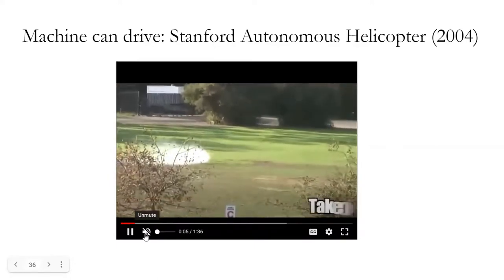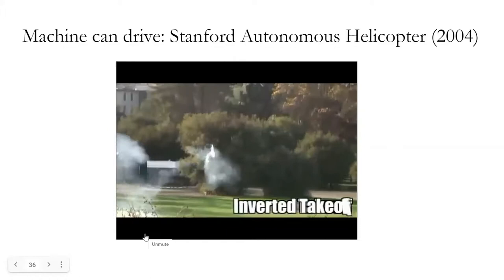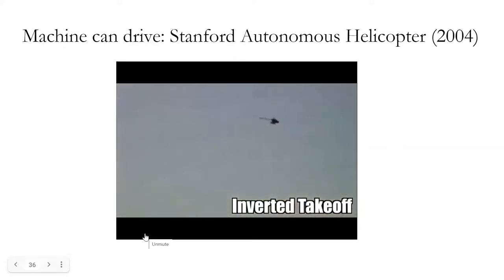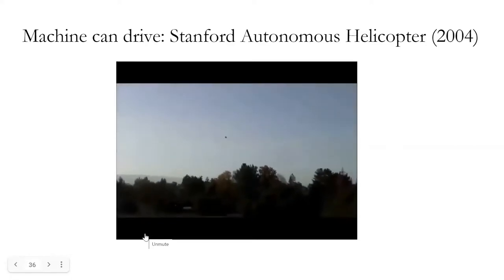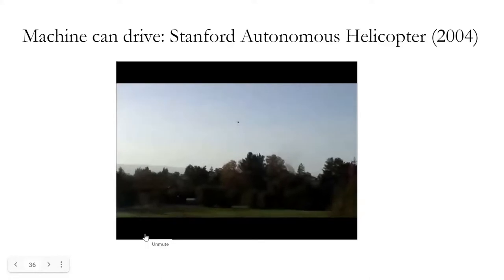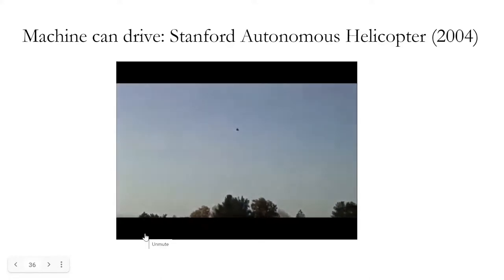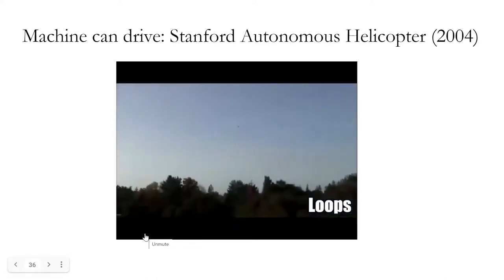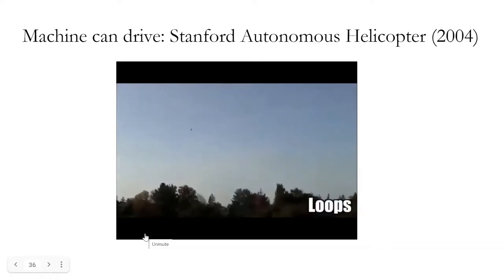Here you can see Stanford's autonomous helicopter which was demonstrated in 2004 to do a lot of stunts, some things which even humans can't do, like flying in reverse, flying upside down, and so on. You can basically see that it can do a lot of things in a very impressive way. This is through machine learning, specifically through reinforcement learning, which is not something that we cover in this course, but still machine learning.